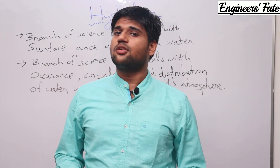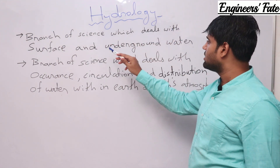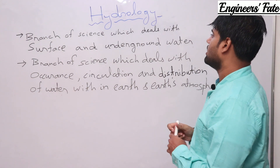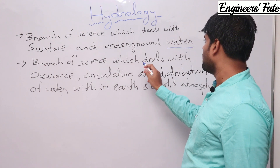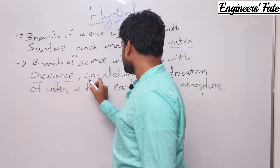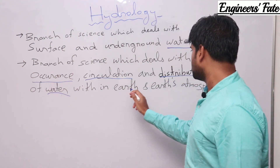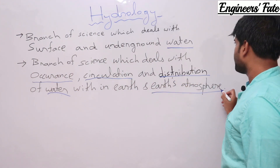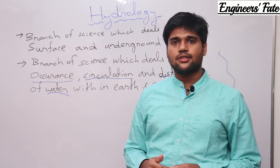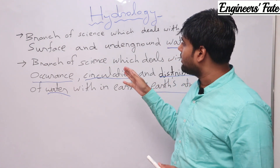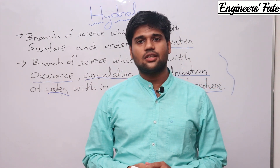Let's look at these two statements. First: it's a branch of science which deals with surface and underground water. And from a book point of view: it deals with occurrence, circulation, and distribution of water within earth and earth's atmosphere. To understand this statement, let's study the hydrological cycle first, because within the hydrological cycle you can understand the value of this statement.